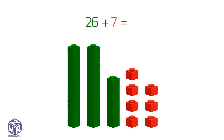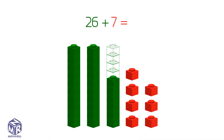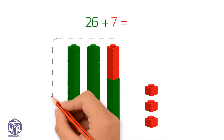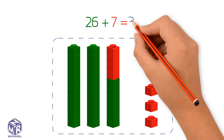Making a 10 can help us add a two-digit number and a one-digit number. What can we add to 6 to make a 10? 4. We break apart 7 into 4 and 3, and give 4 to 6 to make a 10. Now we have three 10s and three 1s. So 26 plus 7 equals 33.